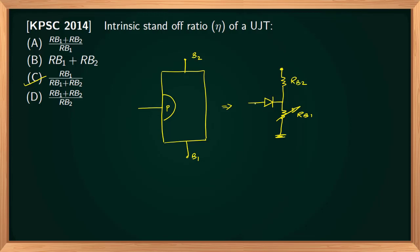Now, intrinsic standoff ratio eta is equal to Rb1 by Rb1 plus Rb2. So the correct option is Option C.